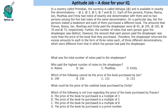Each of 5 persons — Pranav, Reena, Ian, Mushtaq, and Emily — had notes of exactly one denomination with them, and no two of them had notes of the same denomination. On a particular day, they visited a bookshop and purchased a different book each. The amounts they paid were given, and the number of notes each person gave the shopkeeper was distinct.